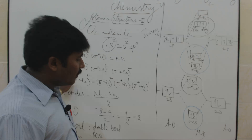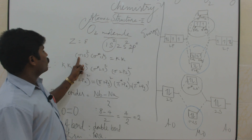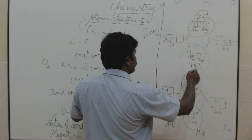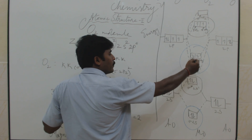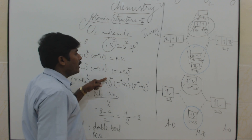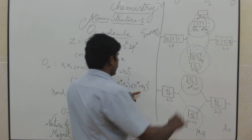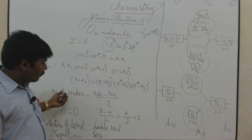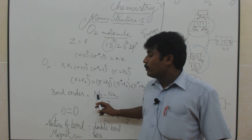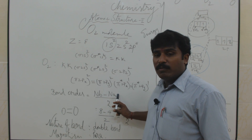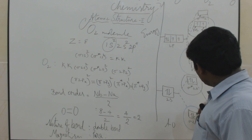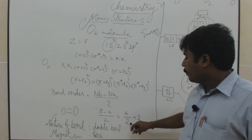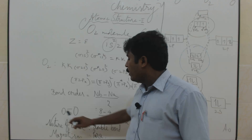Bond order calculation: Nb − Na / 2. Bonding level electrons: 2 (from 2s) + 6 (from 2p) = 8. Anti-bonding level: 2 + 2 = 4. So bond order = (8 − 4) / 2 = 4/2 = 2. Nature of bond is double bond — oxygen to oxygen is a double bond.